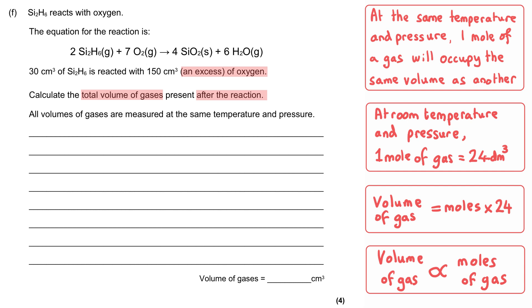We've been asked to work out the total volume of gases present after the reaction, and the total volume will be the volume of gases produced and any gases left over. We've been told that the oxygen is present in excess, which means there will be some oxygen left over at the end of the reaction and all of the Si2H6 will therefore be used up. The way that we unlock this question is by looking at the ratio from the equation.